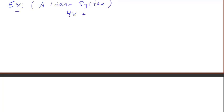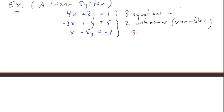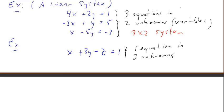Here's an example of a linear system: 4x plus 2y equals 1; negative 3x plus y equals 5; 5x minus 5y equals negative 3. There are three equations and two unknowns, so we refer to this as a 3×2 linear system. Here's another example: x plus 3y minus z equals 1 — one equation in three unknowns, so this is a 1 by 3 linear system.